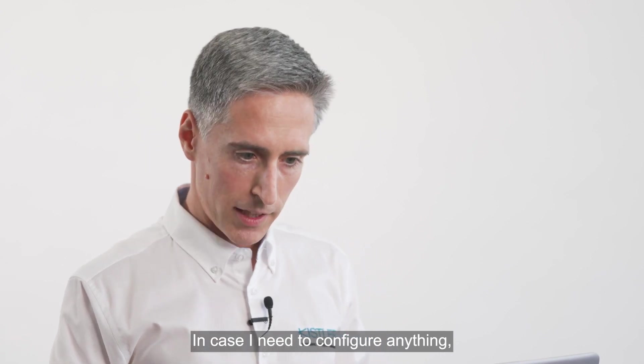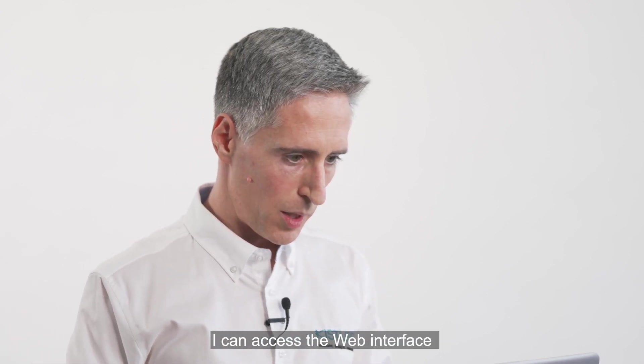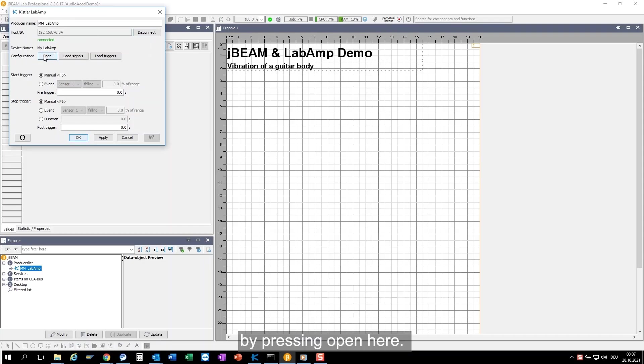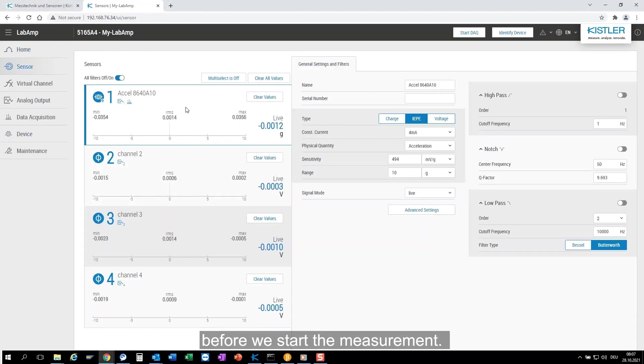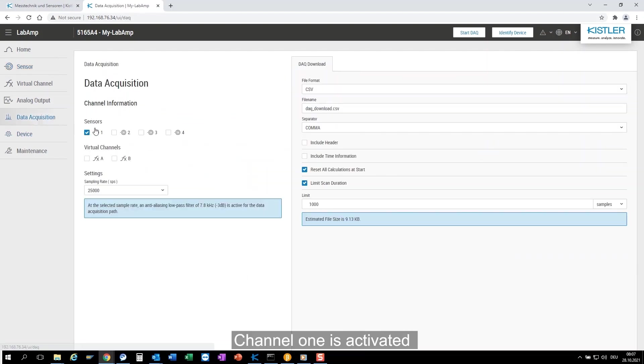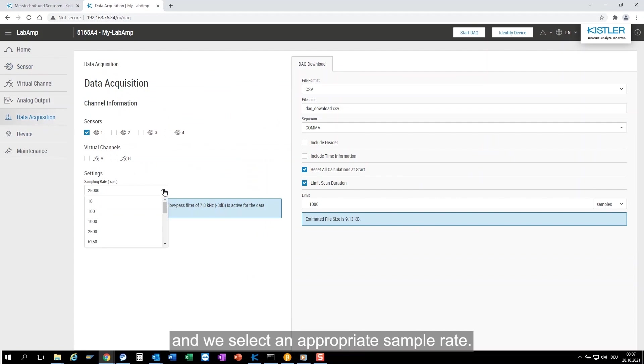In case I need to configure anything, I can access the web interface by pressing open here. Let's check the configuration before we start the measurement. Channel 1 is the accelerometer, the sensitivity is correct, the range also makes sense and we don't use any filters. Channel 1 is activated for data acquisition and we select an appropriate sample rate. 50 kilo samples should be high enough.